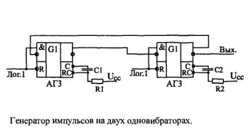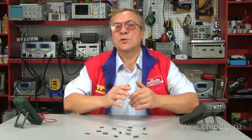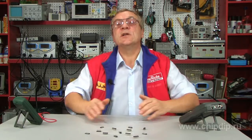Single vibrators may also be used for constructing generators of rectangular impulses with various values of impulse duration and pauses between them. Two single vibrators are connected in a ring such that each of them launches the other as its output impulse ceases. By adjusting the nominals of resistors and condensers, the needed ratios of impulse duration and pauses may be obtained.